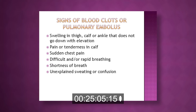The last complication to watch for is blood clots or pulmonary embolus. Look for swelling in your leg — usually in the calf — that is tender, red, swollen, painful, or has a purplish skin color. If you notice any hard areas or prominent veins, call your surgeon right away. However, if you develop chest pain, difficulty breathing, shortness of breath, sweating, or confusion, it may indicate a blood clot in your lungs — call 911 immediately and tell them you had surgery recently.